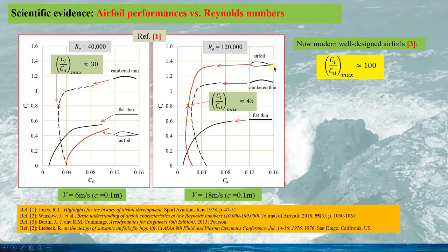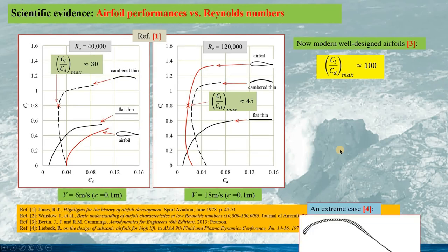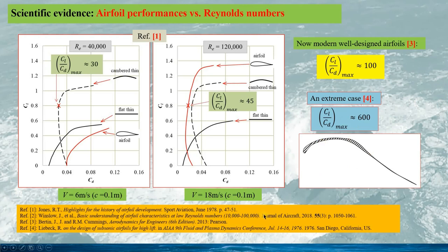Comparing an earlier airfoil to a modern classic airfoil, the maximum lift-to-drag ratio would be about 100, based on the reference. One extreme case in reference 4 proposes an airfoil with a maximum lift-to-drag ratio of about 600. Obviously, this airfoil has no practical use, since it was purely designed to show what can be obtained theoretically.